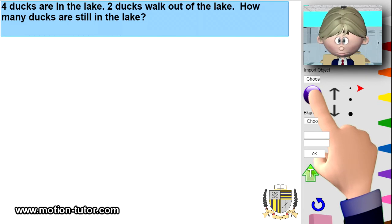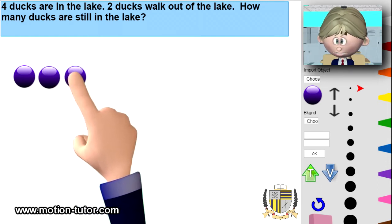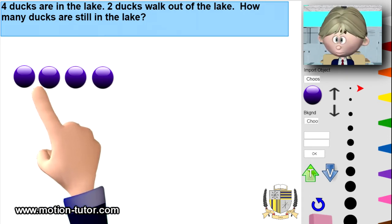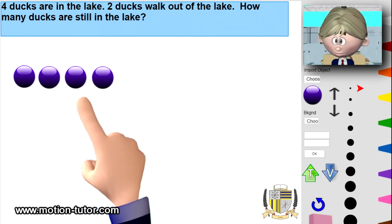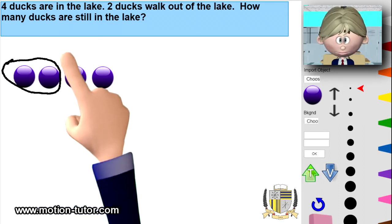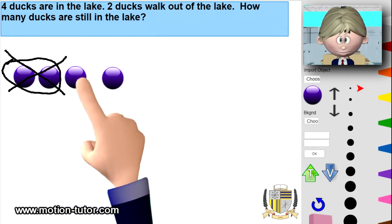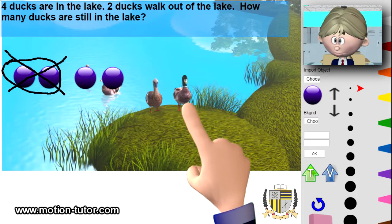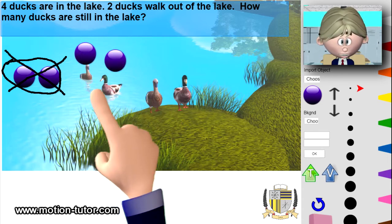Time for counters — this is how you'd solve it on your paper or homework. These will represent four ducks: one, two, three, four. Now two walk out of the lake, so I want to circle and cross out two — one, two. This will represent the two that walked out of the lake, and I clearly see I have one, two that are still in the lake, just like what we saw in the video — here are the two that are still in the lake.